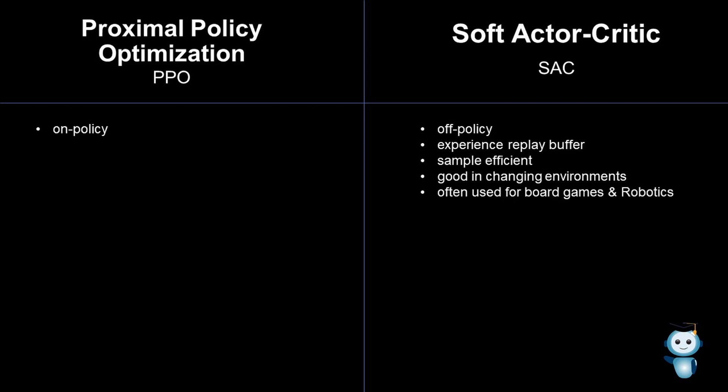So why not always use SAC? Well, SAC is not as stable as PPO. I think it's because with SAC fewer experiences are collected and the algorithm goes through them multiple times. With PPO, it is almost always possible that training converges to an optimum or near optimum when training long enough. That makes PPO suitable for nearly all types of environments.